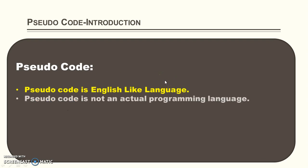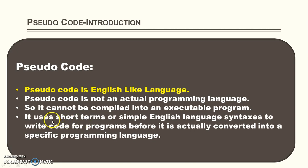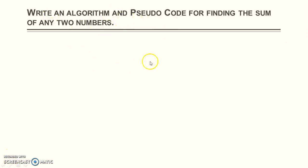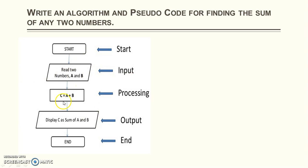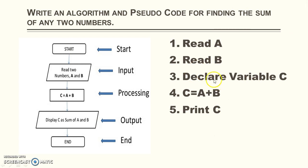Next we will discuss about the pseudocode. A pseudocode is an English-like language. Pseudocode is not an actual programming language, so it cannot be compiled into executable code. Pseudocode uses short terms or simple English language syntaxes to write code for programs before it is actually converted into a specific programming language. Taking the same example of addition of two numbers: first, read one number; then read a second number; then declare a variable c in which you add number a and b, writing c equals a plus b; then print c. This is the pseudocode for adding two numbers.